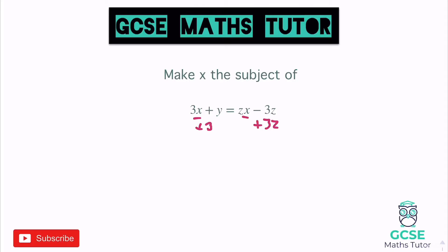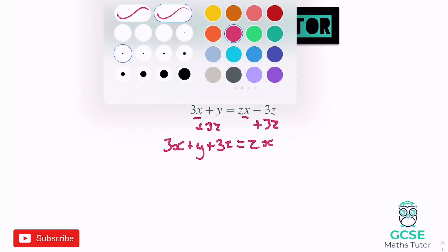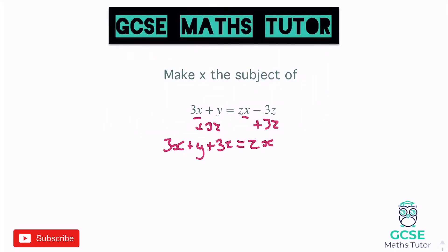So add 3z. Once I've done that, we've got 3x plus y plus 3z, and that now equals zx. Now in order to get all the x's next to each other, I need to get that 3x onto the other side. So I'm going to minus 3x from both sides, because that's a positive 3x, and then I'll have all my x's on the right-hand side.